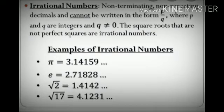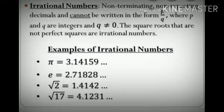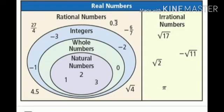Irrational numbers are non-terminating and non-recurring decimals, and cannot be written in the form p/q where p and q are integers and q is not equal to zero. The second condition: square roots that are not perfect squares are irrational numbers. For example, pi (value 3.14159) is a non-terminating and non-recurring decimal. Square root of 2 and square root of 17 are not perfect squares, so these examples are irrational numbers.